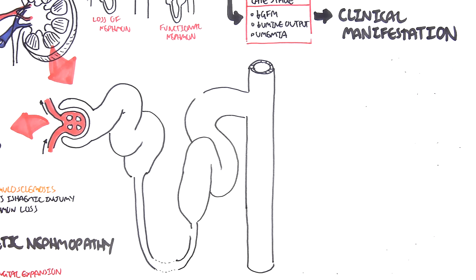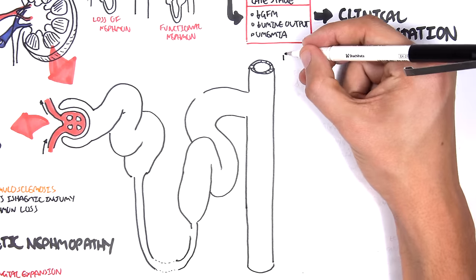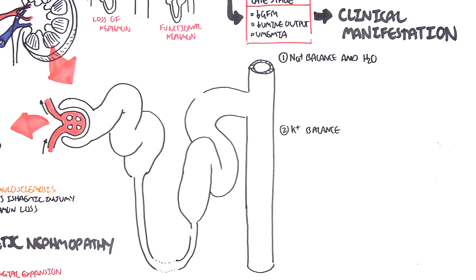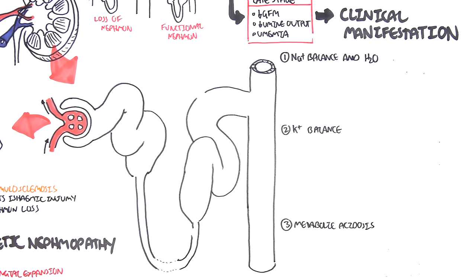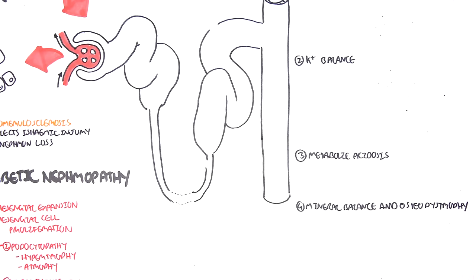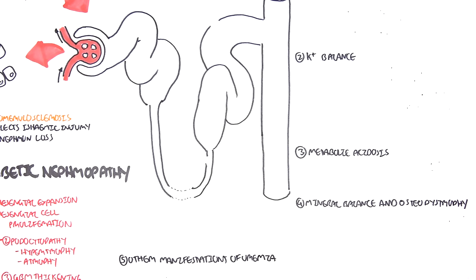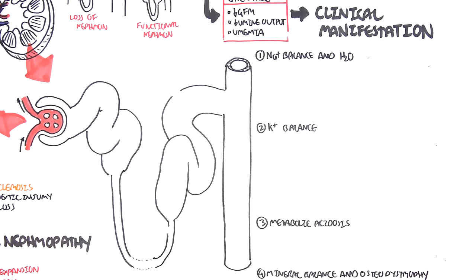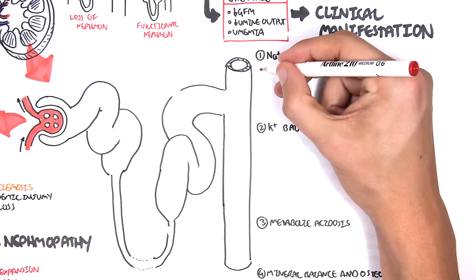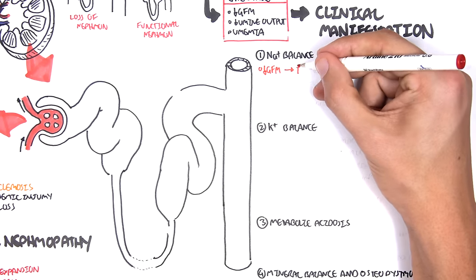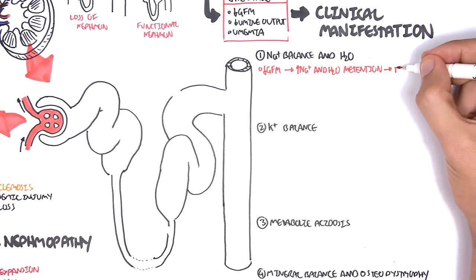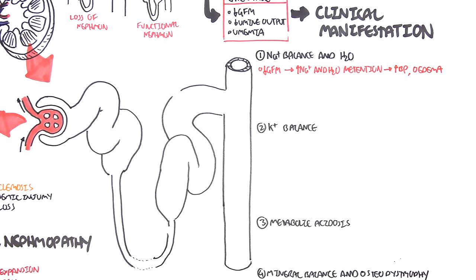The clinical manifestations we will cover include disruption of sodium and water balance, potassium balance, metabolic acidosis, mineral balance and osteodystrophy, and other manifestations of uremia. Starting with sodium and water balance: a decrease in GFR leads to increased sodium and water retention, which leads to increased blood pressure and peripheral edema.